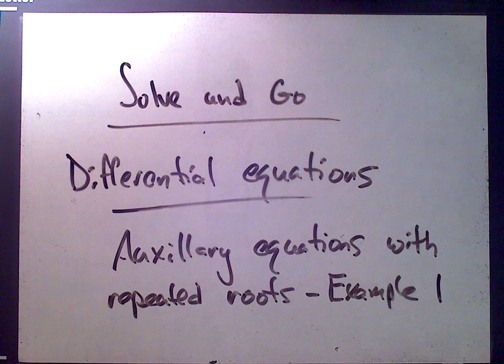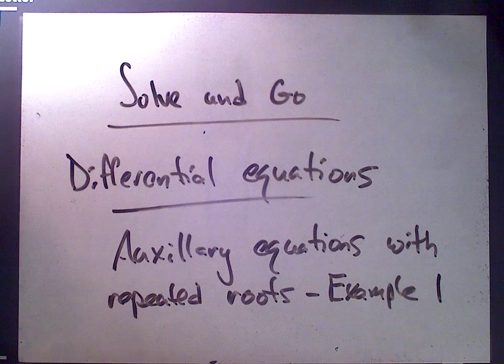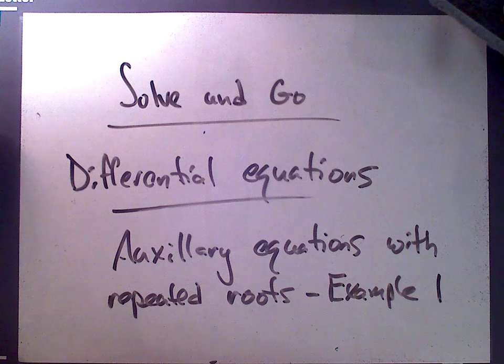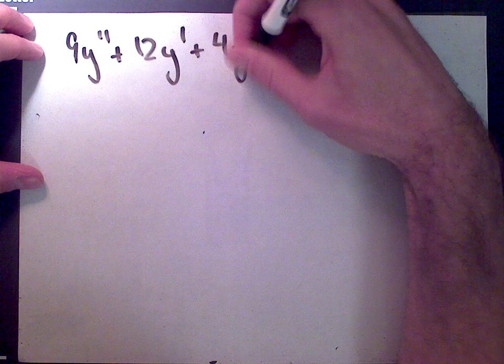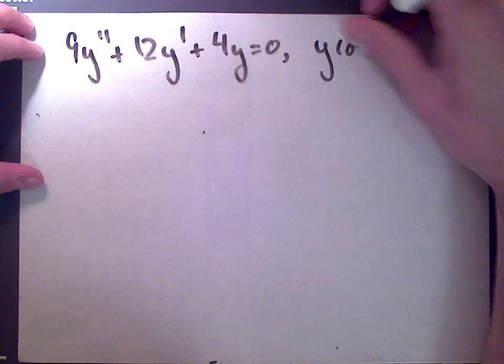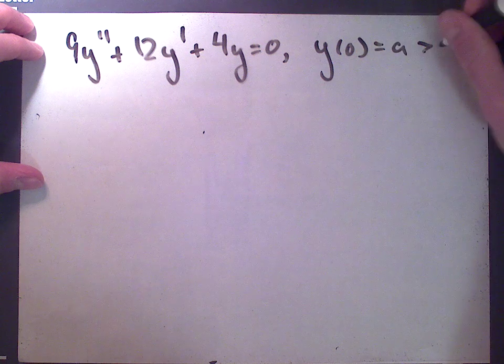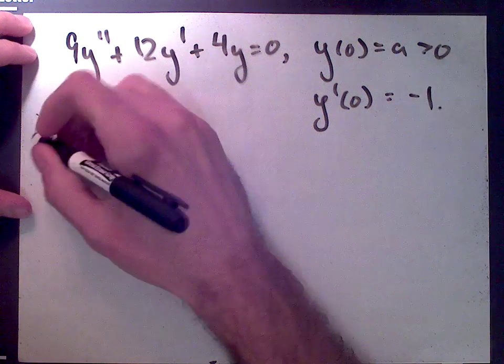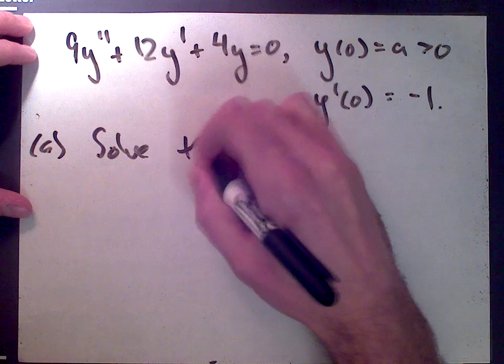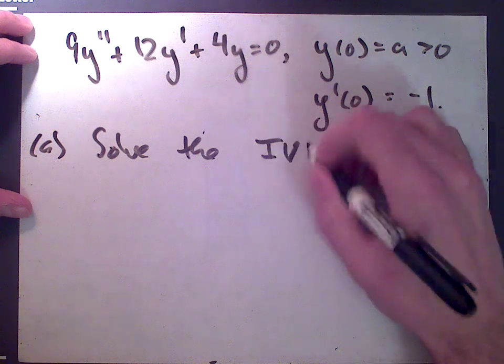Welcome to solveandgo.com. This is a differential equations question dealing with a second order differential equation whose auxiliary equation has repeated roots. The initial value problem is: 9y'' + 12y' + 4y = 0, with y(0) = a where a > 0, and y'(0) = -1. Part A asks us to solve this initial value problem.